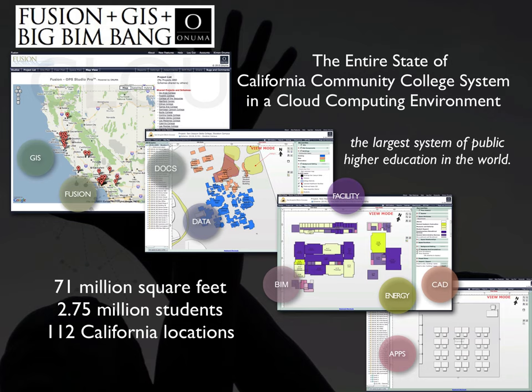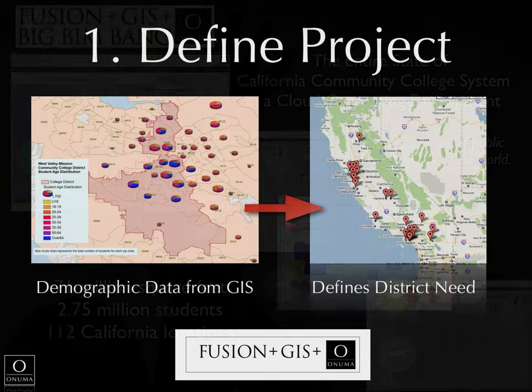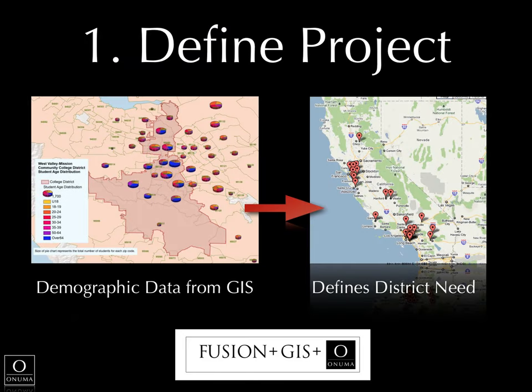Today we're going to focus on the BIMSTORM Education California Community Colleges. There are over 112 locations with 5,000 buildings, and the Foundation for California Community Colleges needs to manage and fund these facilities. One of the facilities we're focusing on is MiraCosta College. California has a lot of budget constraints right now, similar to anywhere else in the world, so it's important to be efficient in planning projects.